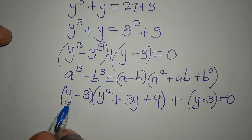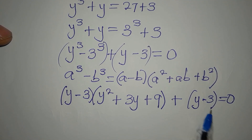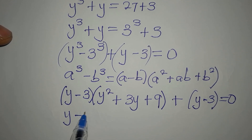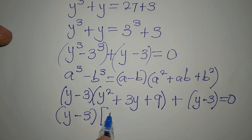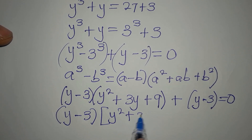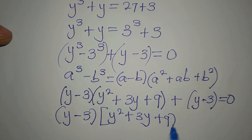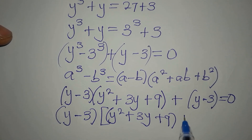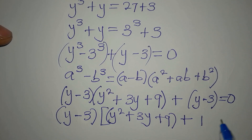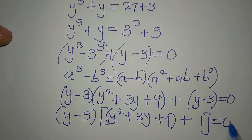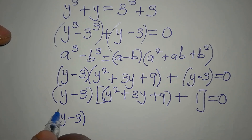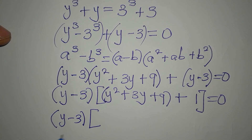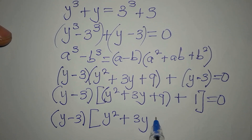Now (y minus 3) appears in both terms, so it comes out as the common factor. Inside the bracket we have y² plus 3y plus 9 plus 1, giving us (y minus 3)(y² plus 3y plus 10) equals 0.